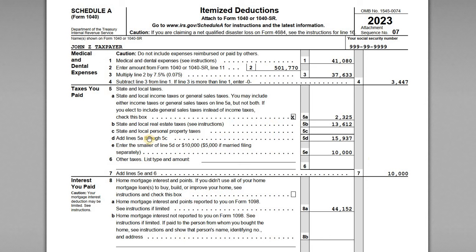There's a similar issue with state and local personal property taxes. In Florida, vehicle registration taxes are not assessed on the value of the vehicle — they're based on weight — so taxes paid in Florida on personal property like vehicles are not deductible. But in your state it might be different: some states do tax based on the value of the property, which would give you an opportunity to report amounts on line 5c for state and local personal property taxes.